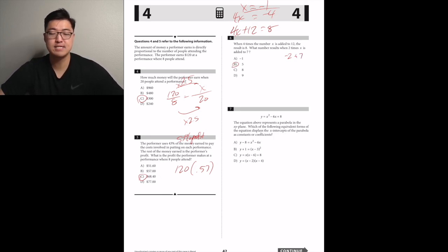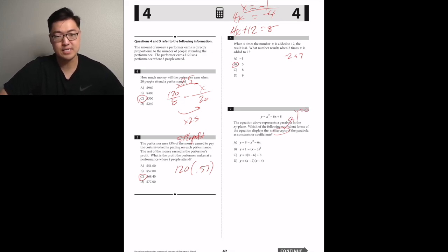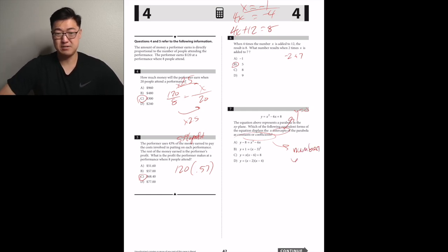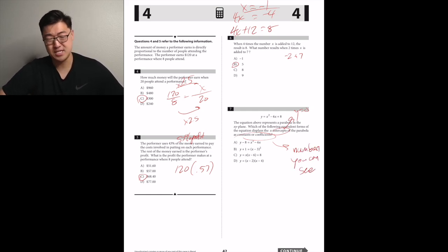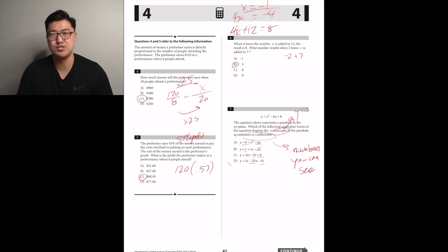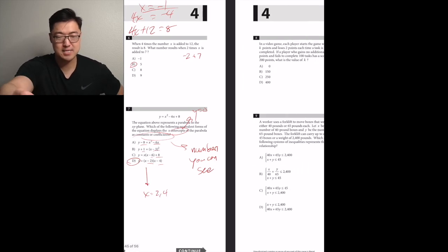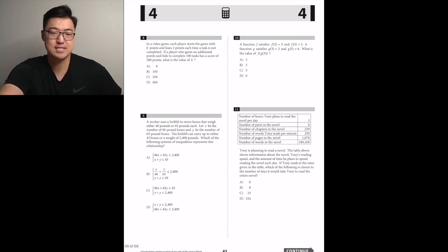The equation represents a parabola in the xy-plane. Which equivalent form displays the x-intercepts as constants or coefficients? X-intercepts mean make y equal to 0. They want a form that visibly shows the x-intercepts — that's the factored form, D, because it tells you x is 2 and 4.